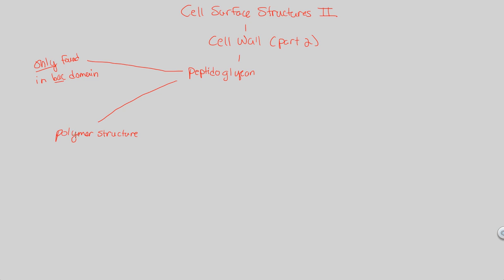It consists of monomers built up together to give us a larger polymeric structure. What is this polymer specifically? It's sugars - because we have the 'glycan' part of the word - cross-linked by short polypeptides. So there are both parts of the word right there: 'peptido' for polypeptides, 'glycan' for sugars. That gives us our basic polymeric structure.